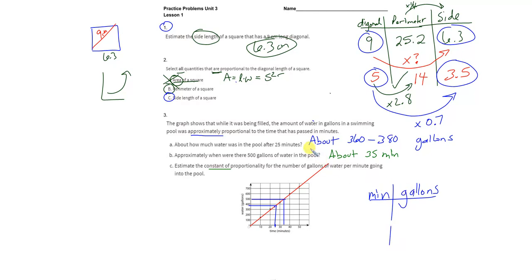And I look for an ordered pair that's on an intersection. And I found one right here that's pretty close. In 40 minutes, it can put out about 600 gallons.